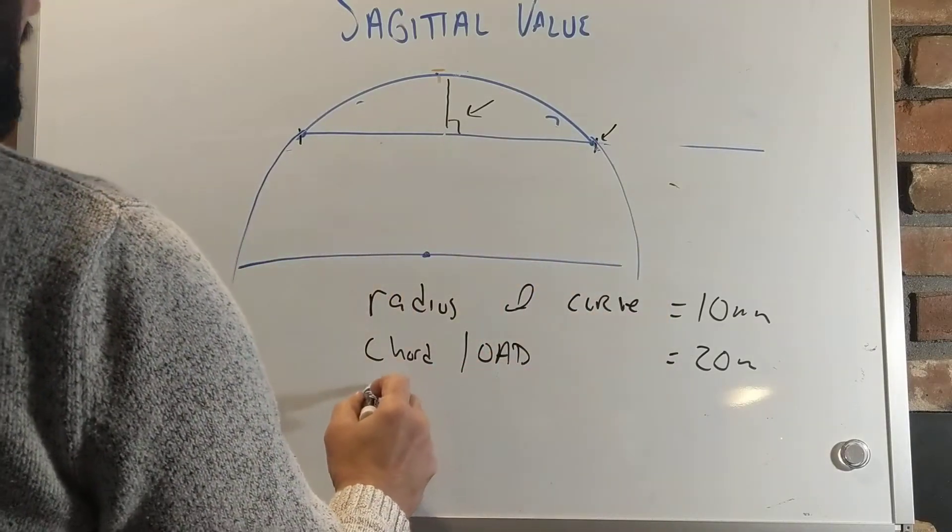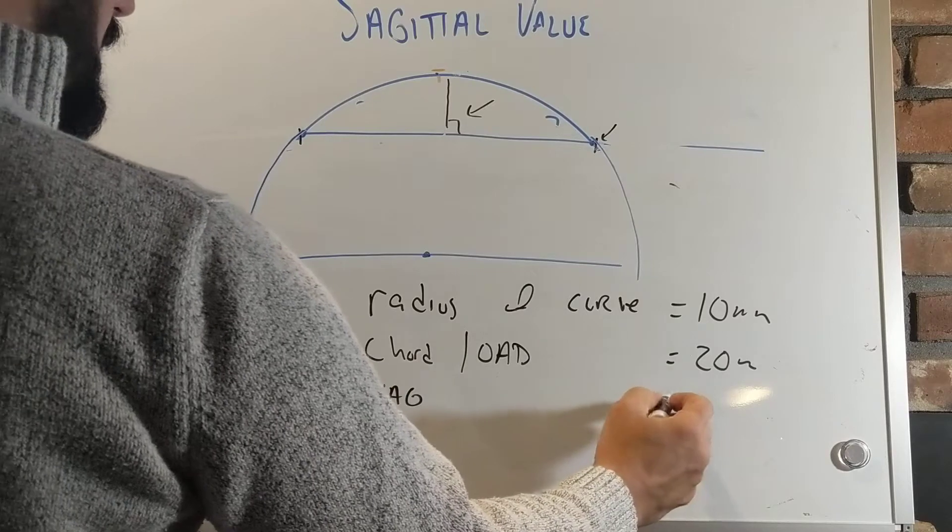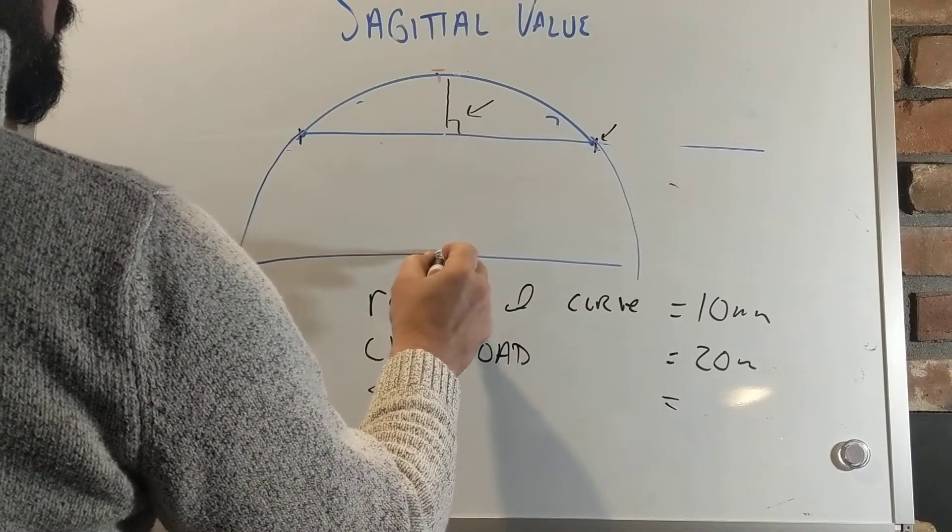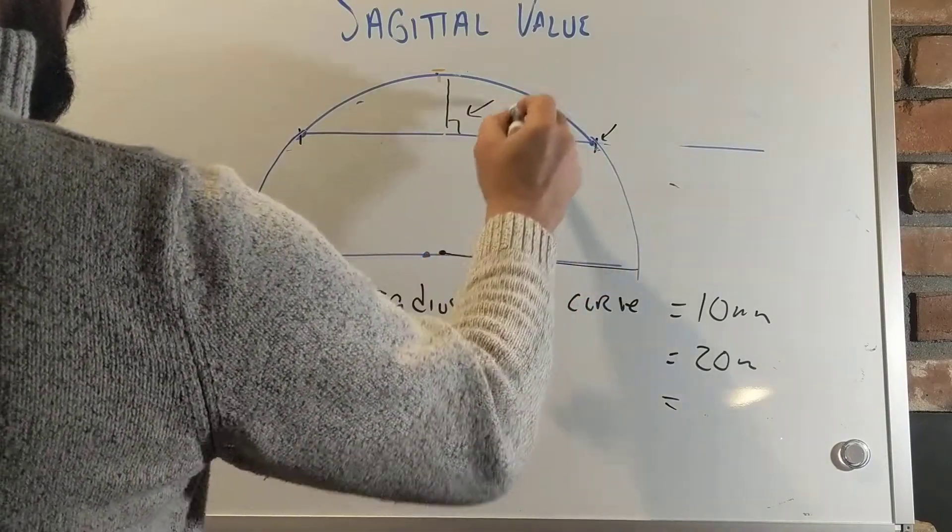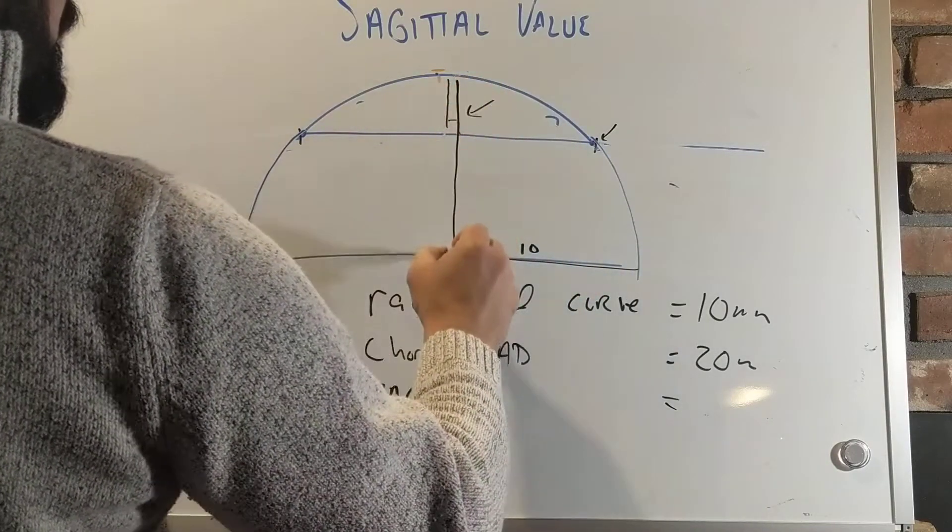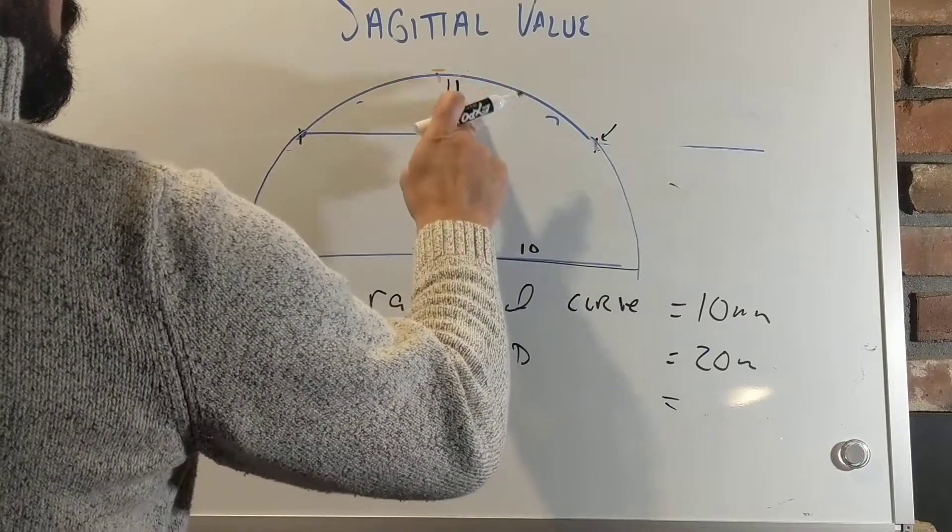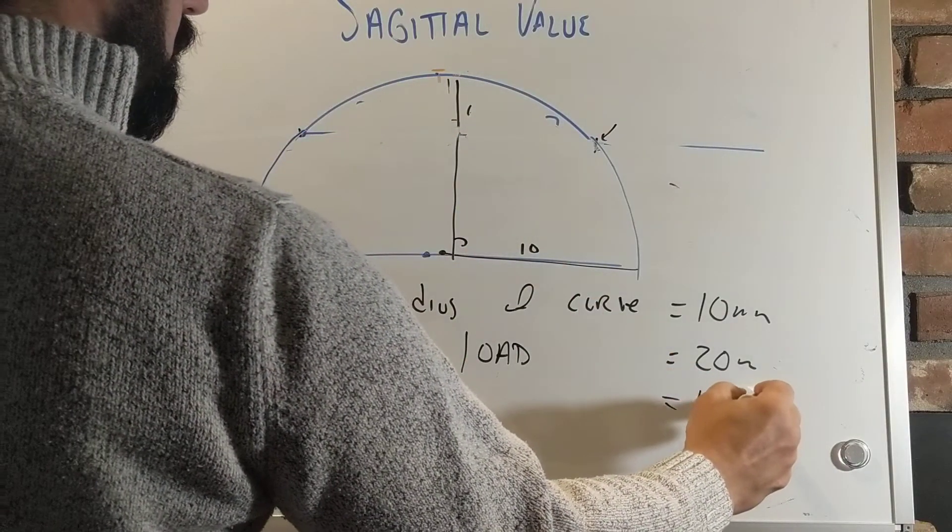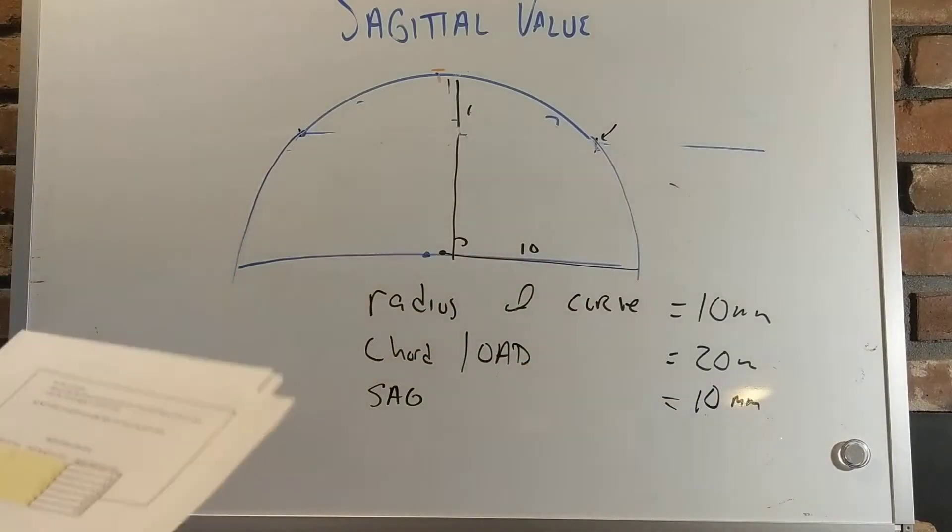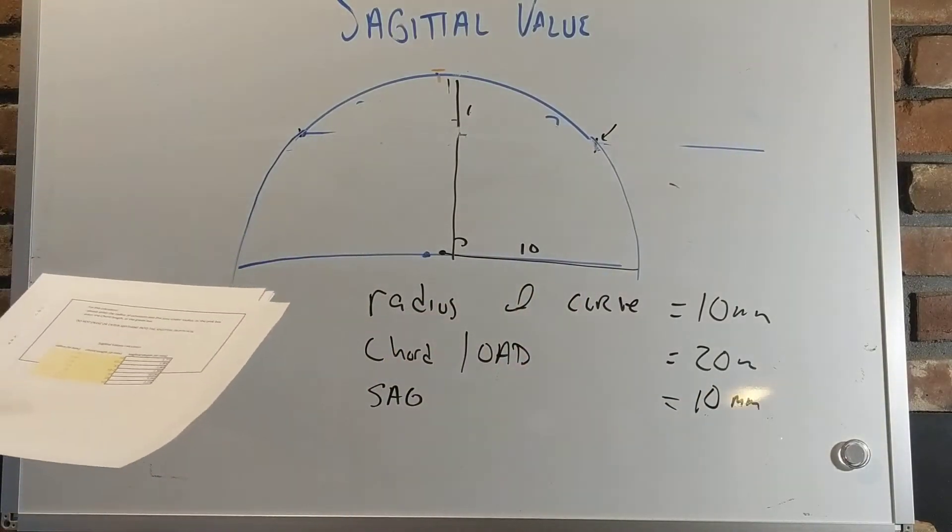Then your sagittal value would actually be if this here were 10. That's 10. That's 10. That's 10. Then my sagittal value in this case would actually be 10 millimeters. That's the easiest one to do because if you're bisecting the circle, just like we said.